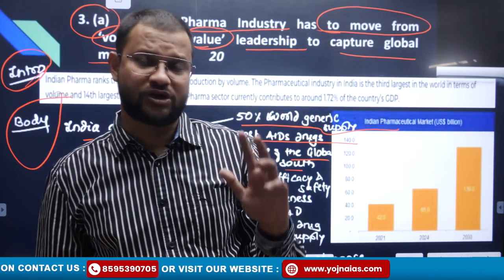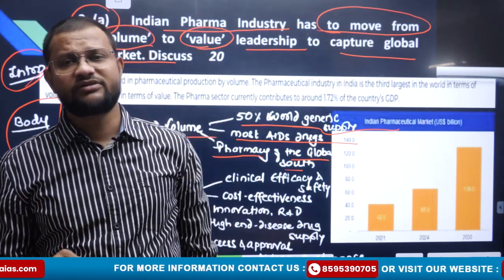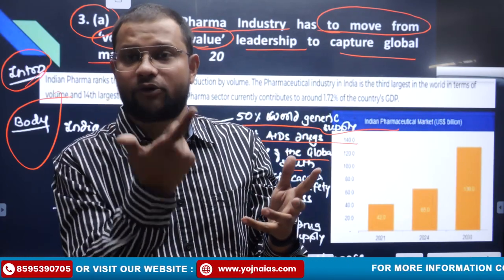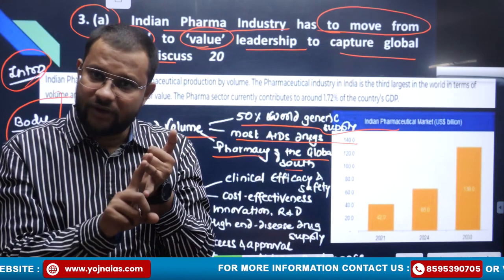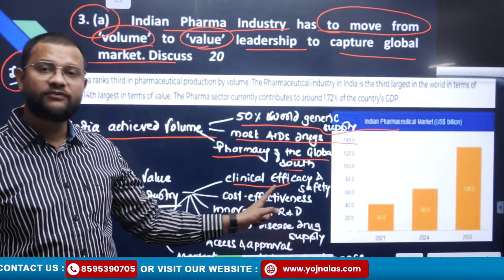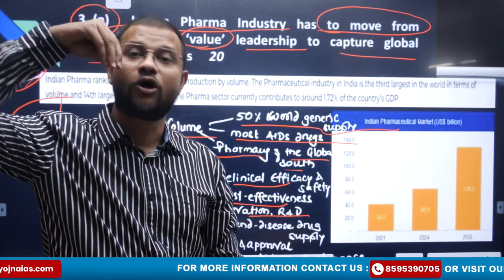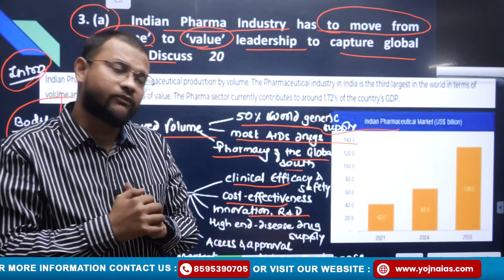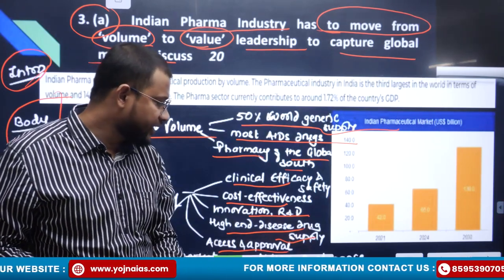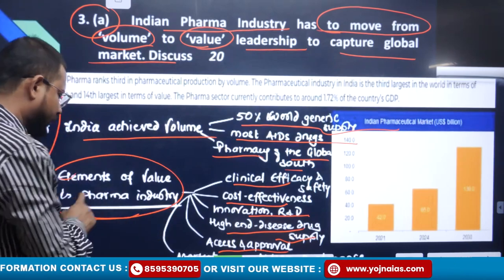The context of this question involves some deaths in Africa due to Indian pharmaceutical products and Indian syrup in Afghanistan — showing the need to focus not just on volume of production but on quality. Value means research and development, clinical efficiency, cost-effectiveness, high-end drugs for cancer and difficult-to-treat diseases with high pharmaceutical costs, supply, access and approval, and market regulation standards. These form elements of value in the pharmaceutical industry.